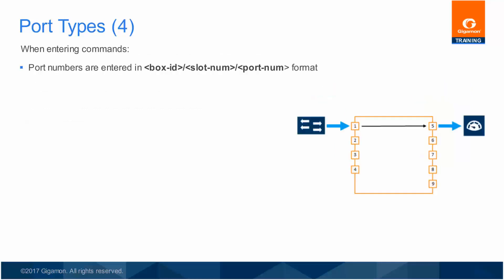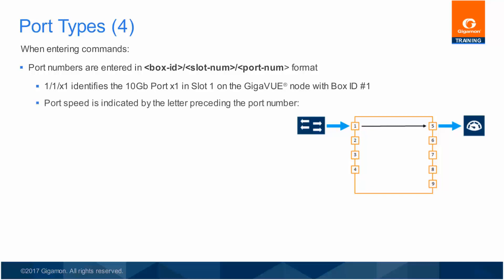Be aware that the naming convention for Gigaview ports uses different alphabetic letters to designate port speed capability. Across the H series, a common syntax is used to identify which node, slot, and port. Whether clustered or standalone, the syntax is always represented as box ID, followed by slot number, then port. Each port designation is accompanied by the highest link speed which it can support.